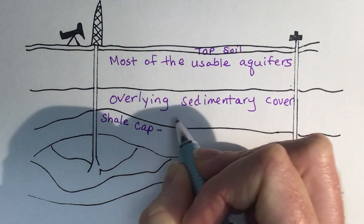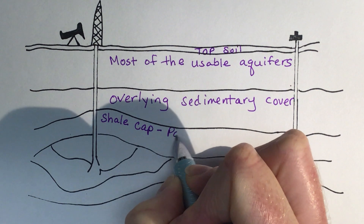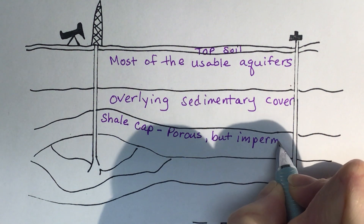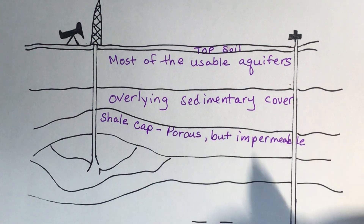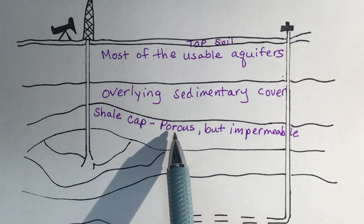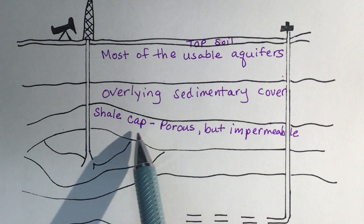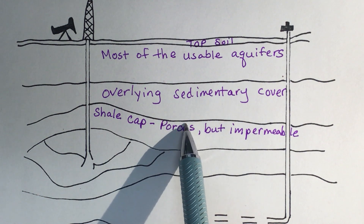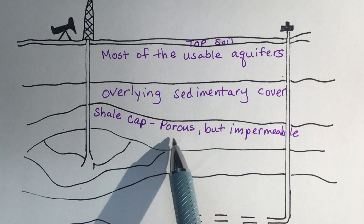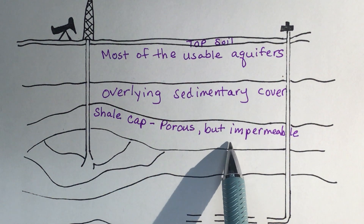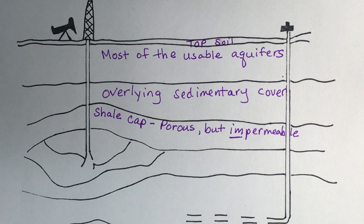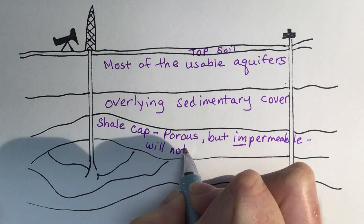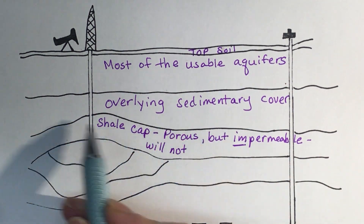The shale cap is porous but impermeable. Porous means there are pores and things can fill up between the rocks but can't move through them. Permeable means fluids or gas can move through the layer; impermeable means they can't. So the shale cap will not let oil and gas move through it — it seals off the oil and gas.